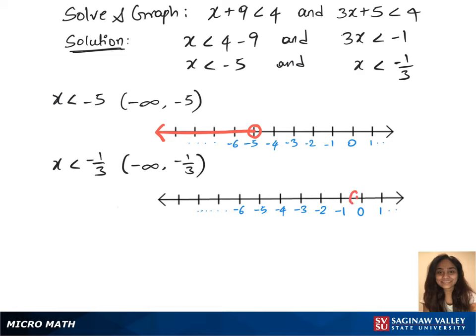And now we see that the intersection between those two graphs is x less than minus 5, so we'll write that there: x less than minus 5. And this has the solution set minus infinity to minus 5. This is our solution.